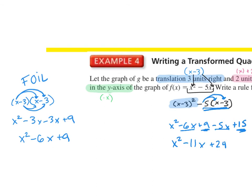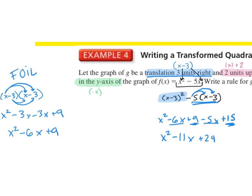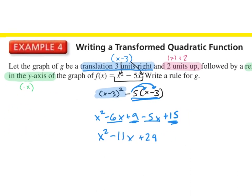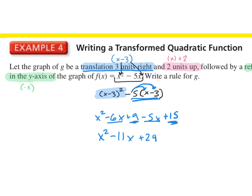So right now, all we did was apply the translation three units right. Next, we're going to apply the 2 units up — we need to add 2 to the outside. We can combine like terms, so we have x squared minus 11x plus 26.